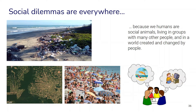We can find social dilemmas all over the place in our everyday experience and in many different challenges in social life. This is because humans are social animals living in groups with many other people in a world created and changed by people. Whether it's littering, deforestation, hanging out on a public beach, or even group work — these are all situations where there might be a potential social dilemma. It is therefore interesting and fruitful to explore these kinds of situations in everyday experience, also in the classroom, to help students understand what social dilemmas are about and why they might be a challenge.